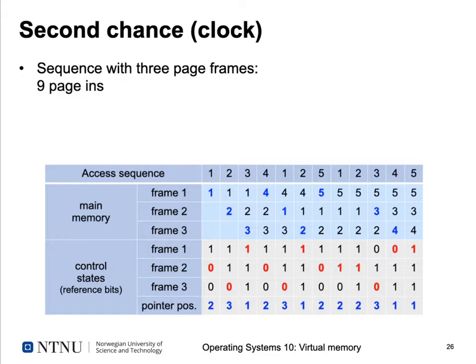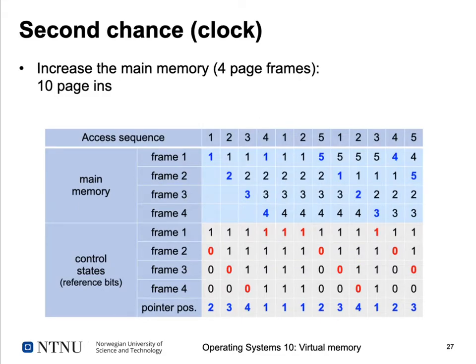Overall, with this access sequence and three page frames in main memory, we had nine page-ins. When we increase to four frames — as done in previous examples — going through the example again yields ten page-ins. So increasing memory actually increases the number of page-ins with the second chance algorithm — demonstrating Belady's anomaly.